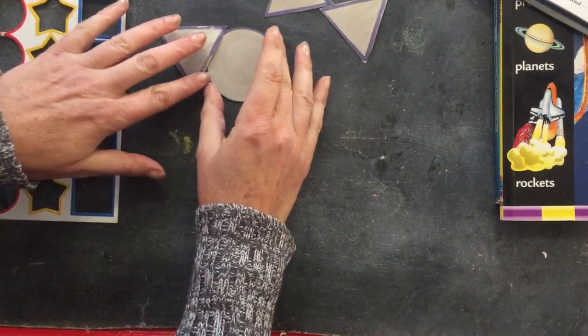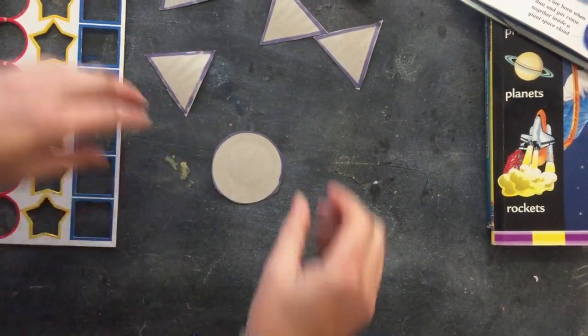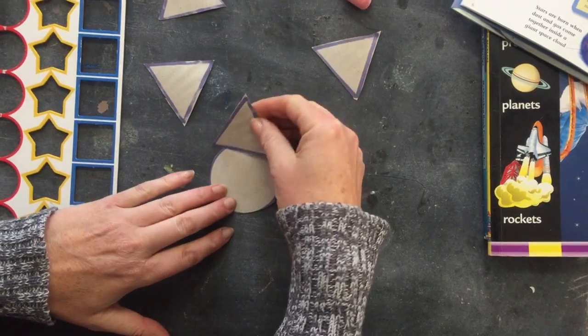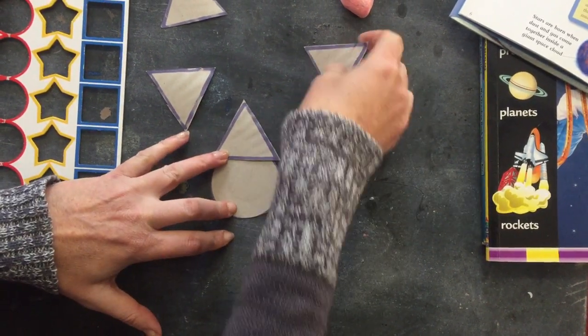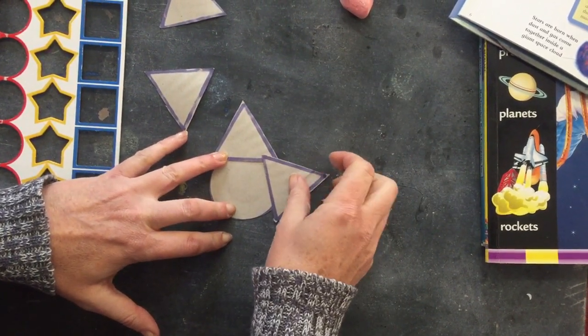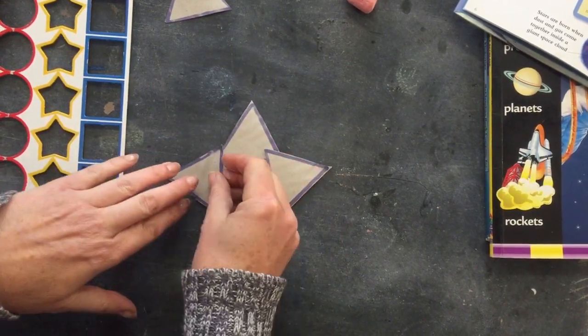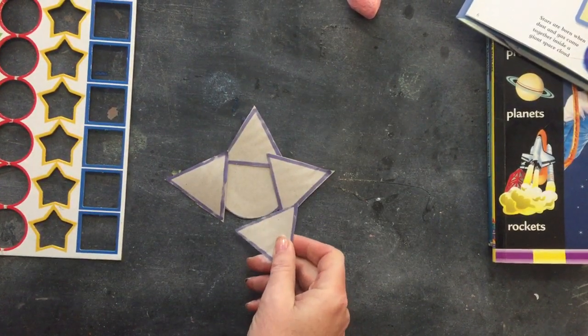Stars. We're going to make a star. We're going to use a circle. We're going to use a triangle on the top, a triangle on the sides, like little arms, and two little legs.